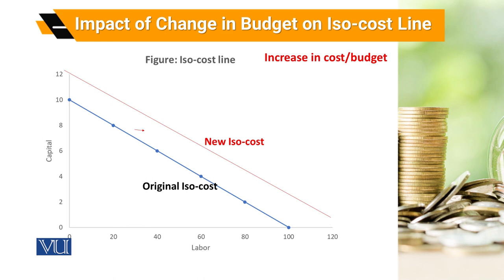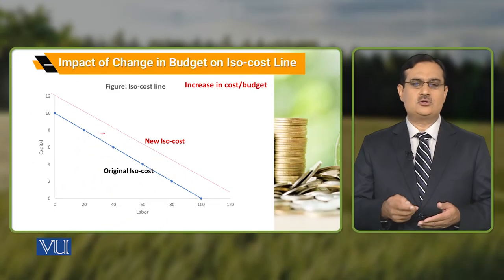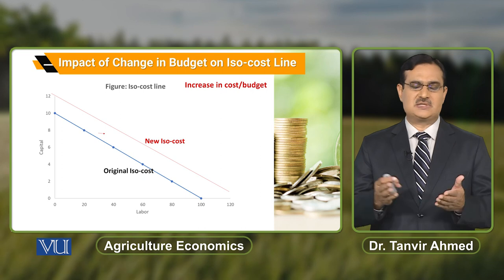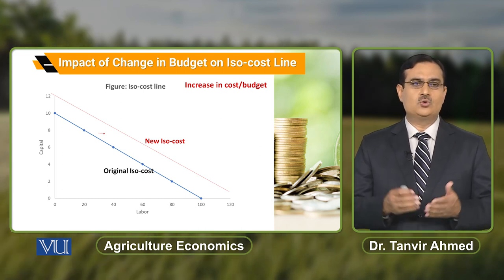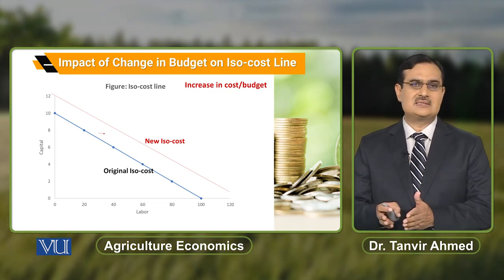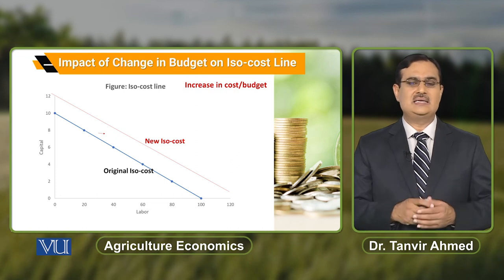اب اگر farmer نے labor اور capital پہ جو resources allocate کی ہیں، ان کی amount increase کر دے، تو because of this increase in amount allocated for the purchase of these two inputs، our original ISO cost line will shift from original position to a new ISO cost line۔ یہ increase in purchasing capacity of the farmer for both inputs is because of allocation of more resources to purchase capital and labor۔